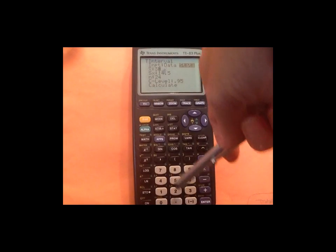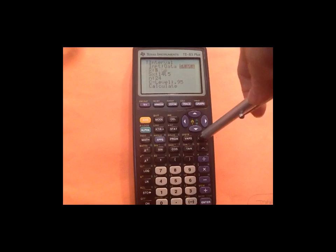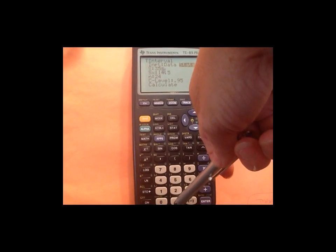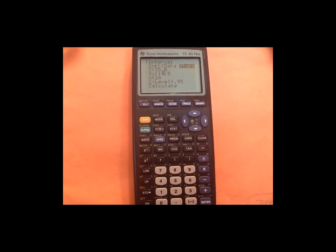X bar is your sample mean. Our sample mean is 35.5. Notice I had some other numbers in there and I just typed right over them. If you make a mistake like I just did, just hit clear and retype it. 35.5 is our sample mean.